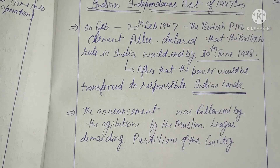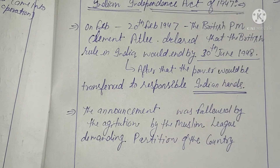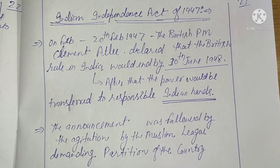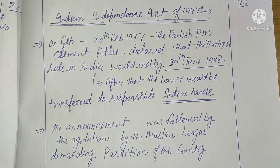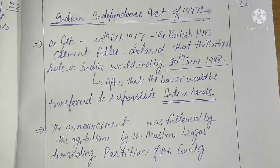With the historical background of the constitution now complete, the next topics will be: the making of the constitution, sources of the constitution, and then Union and its territories — where the proper constitutional provisions will be studied in detail one by one, including all the schedules.